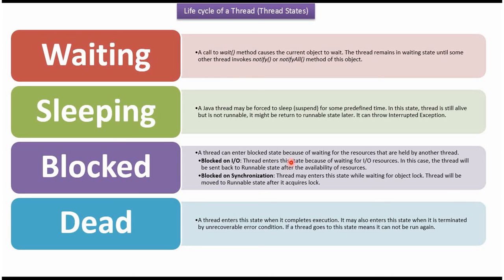Blocked state — a thread can enter blocked state because of waiting for resources that are held by another thread. Blocked on IO: the thread enters this state because of waiting for IO resources; the thread will be sent back to runnable state after the availability of the resources. Blocked on Synchronization: the thread may enter this state while waiting for an object lock, and will be moved to runnable state after it acquires the lock.